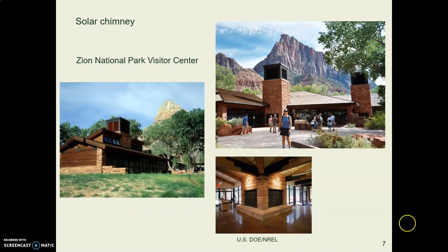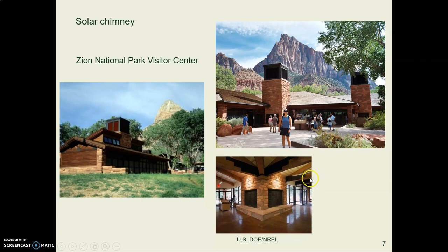Here's the Zion National Park Visitor Center. We saw this building when we talked about Trombe walls, which are along the front of the building. Up above that wall are two dark towers — you can see them in the upper right photo — and those are solar chimneys. The dark structure on top heats up, warm air rises out of the tower and pulls air from below. Inside the building is a structure connected to that which looks like a fireplace, but it's not. Those are large openings for air to flow through as it moves up and out through the chimney.